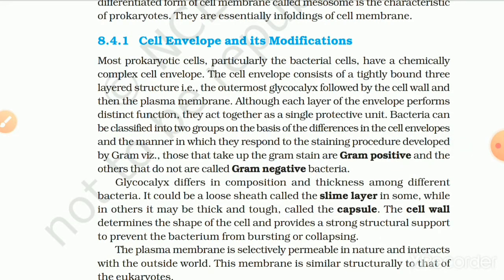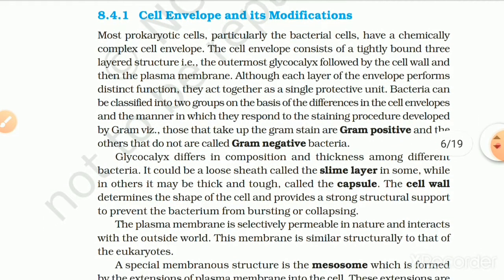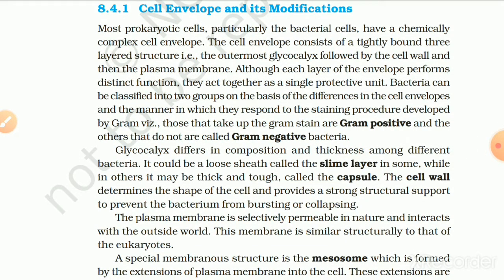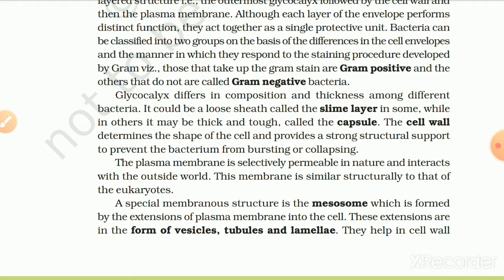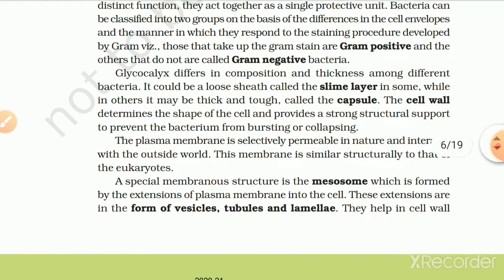8.4.1 Cell Envelope and its Modifications. Most prokaryotic cells, particularly bacterial cells, have a chemically complex cell envelope. The cell envelope consists of a tightly bound three-layered structure: the outermost glycocalyx, followed by the cell wall, and then the plasma membrane. Although each layer performs a distinct function, they act together as a single protective unit. Bacteria can be classified into two groups based on differences in their cell envelope and their response to the Gram staining procedure — those that take up the Gram stain are Gram positive, while others are Gram negative. Glycocalyx differs in composition and thickness; it could be a loose sheath called the slime layer, or a thick and tough capsule.